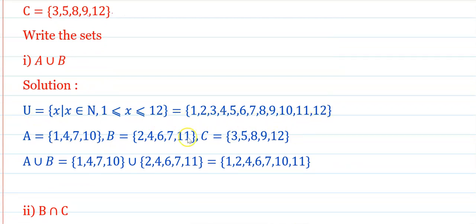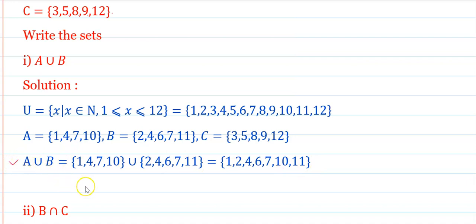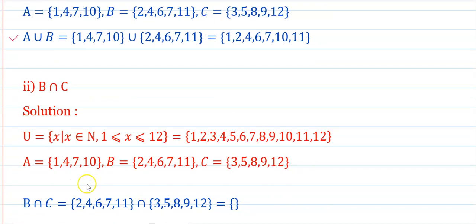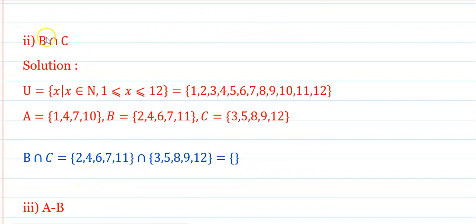A = {1, 4, 7, 10} and B = {2, 4, 6, 7, 11}. We want to find A union B. The union is {1, 2, 4, 6, 7, 10, 11}. This is A union B. Next: B intersection C.